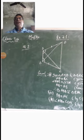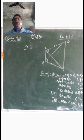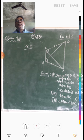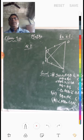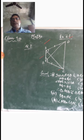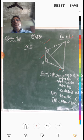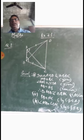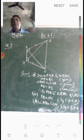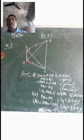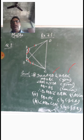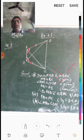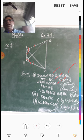Exercise 7.1, Question number 2. We have to prove that triangle ABD is congruent to triangle ABC. It is given that AD is equal to BC and angle DAB is equal to angle ABC. In two triangles ABD and BAC: AD equals BC (given), and angle DAB equals angle CBA (given).